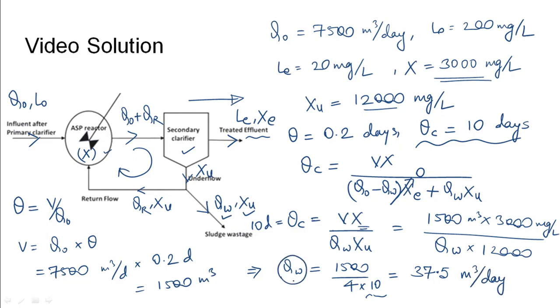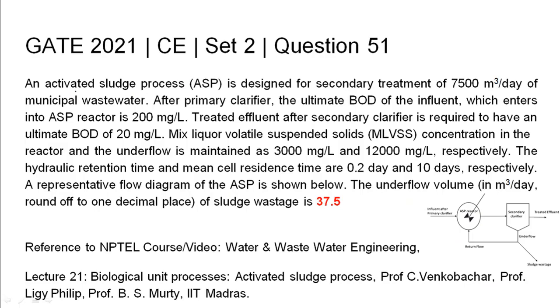Qw is our underflow for the activated sludge process. So the activated sludge process system was given, all the parameters such as inflow, inflow BOD, outflow BOD, the MLVSS in the system and the underflow. The hydraulic retention time and mean cell residence time were given. The underflow volume was found out to be 37.5 meter cube per day, and this was found using the equation of mean cell residence time theta_c. The relevant NPTEL reference has been listed.